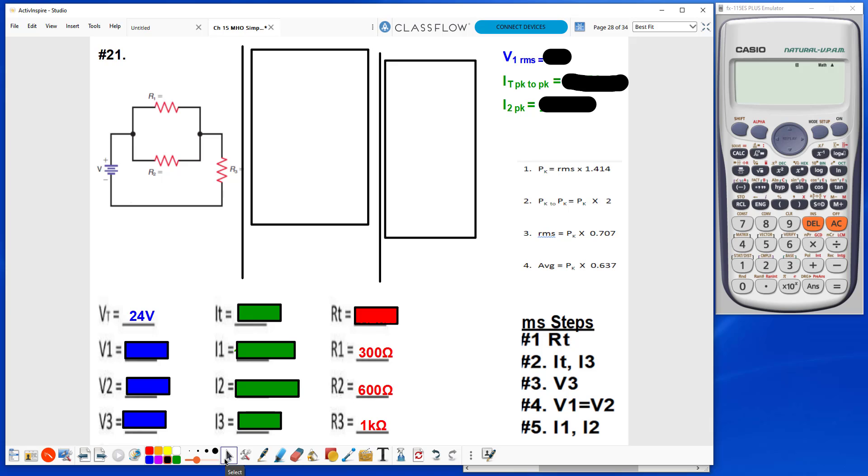In this video, I'll be finding the AC values from the Chapter 15 math handout, problem number 21. So here we see that we have a basic combination circuit, and I've plugged in my known values from the Chapter 15 math handout.